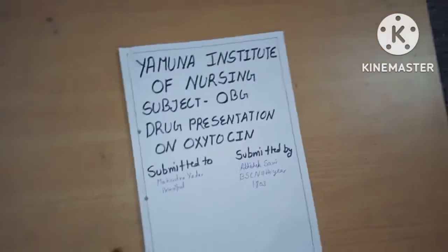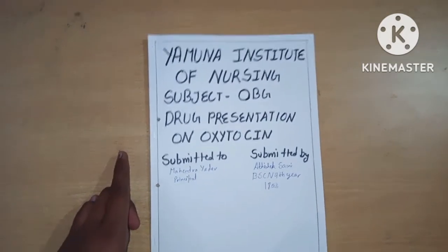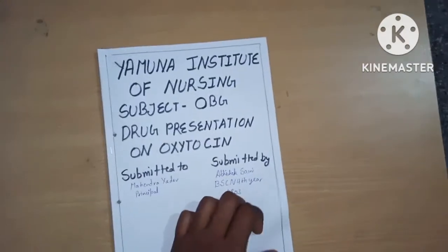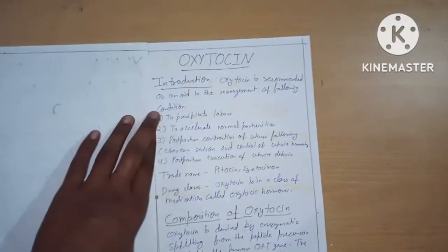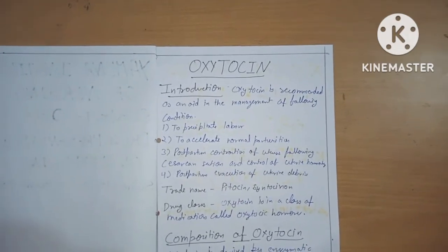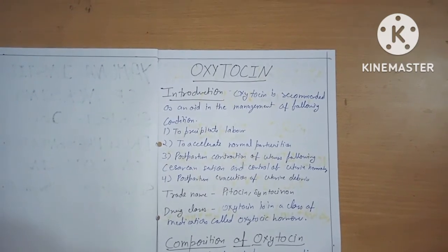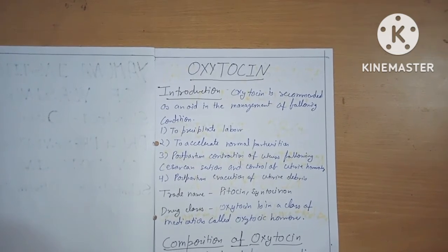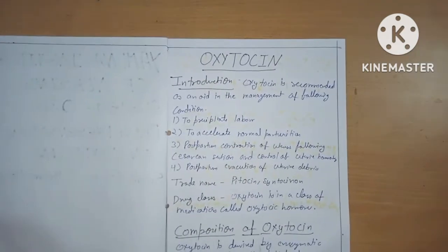Hello everyone, today we discuss about drug presentation — how to make a drug presentation in OBG on oxytocin. First, the introduction of the drug. Oxytocin is recommended as an aid in the management of the following conditions: to precipitate labor, to accelerate normal parturition, postpartum contraction of the uterus following caesarean section, control of uterine hemorrhage, and postpartum evacuation of uterine debris.